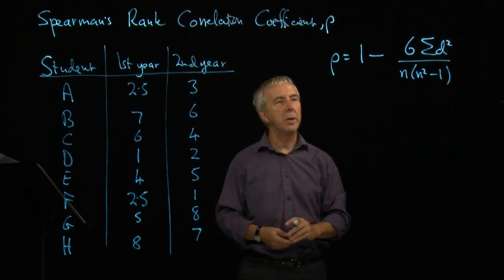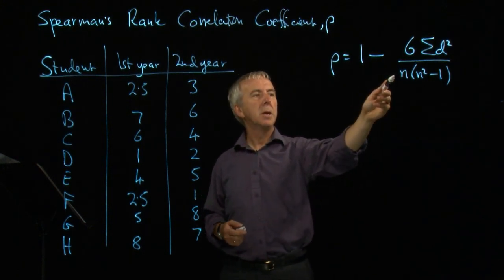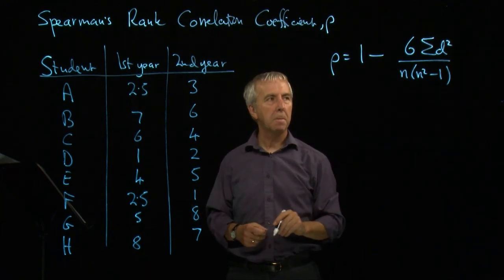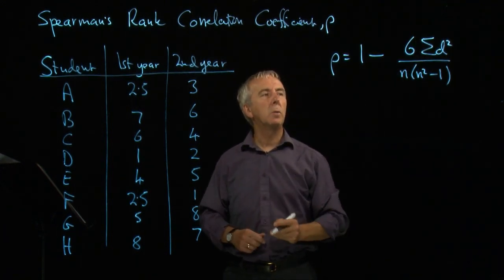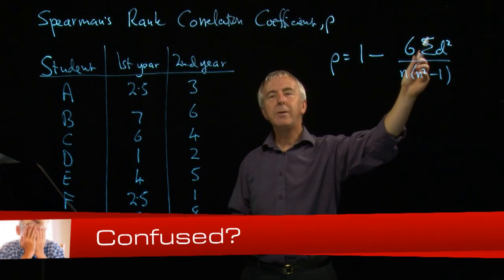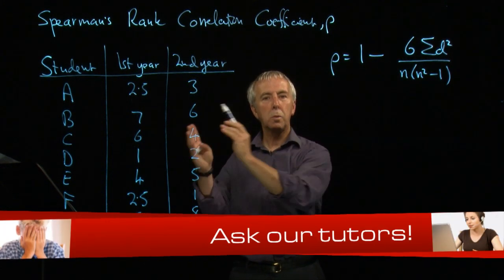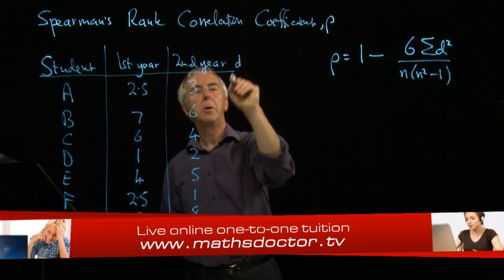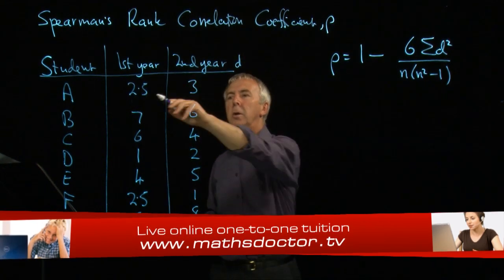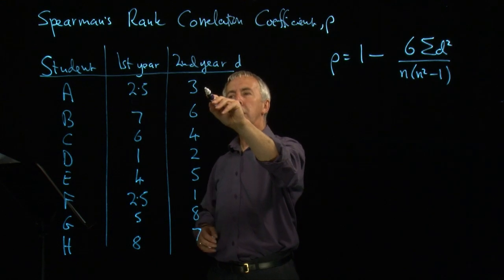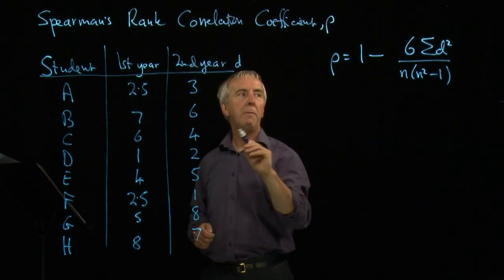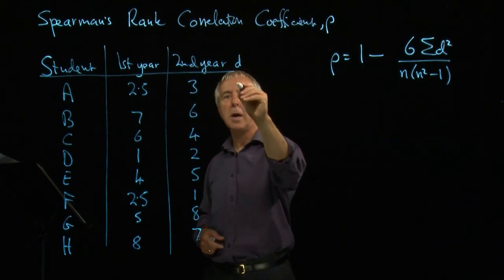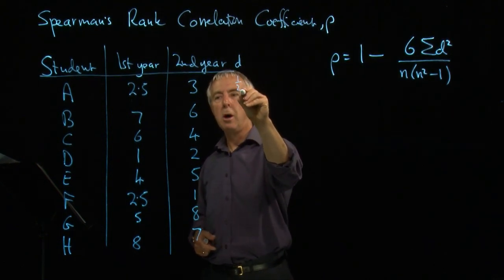Let's see what that means. n is the number of people, number of items, in our case eight. The key thing is sigma d squared. d is the difference in ranking between the two successive measurements. So we can put this here. Two and a half minus three is minus a half. We're going to square it, so we won't bother with the minus signs. They'll disappear when we square anyway. So this difference is a half.